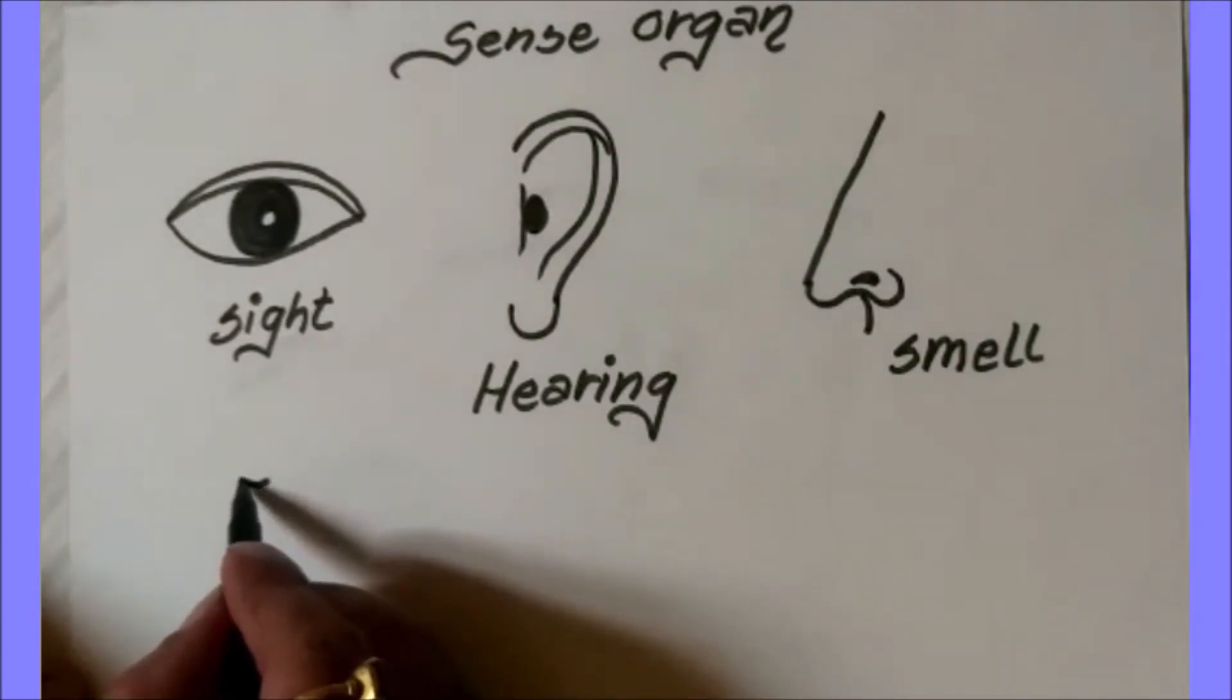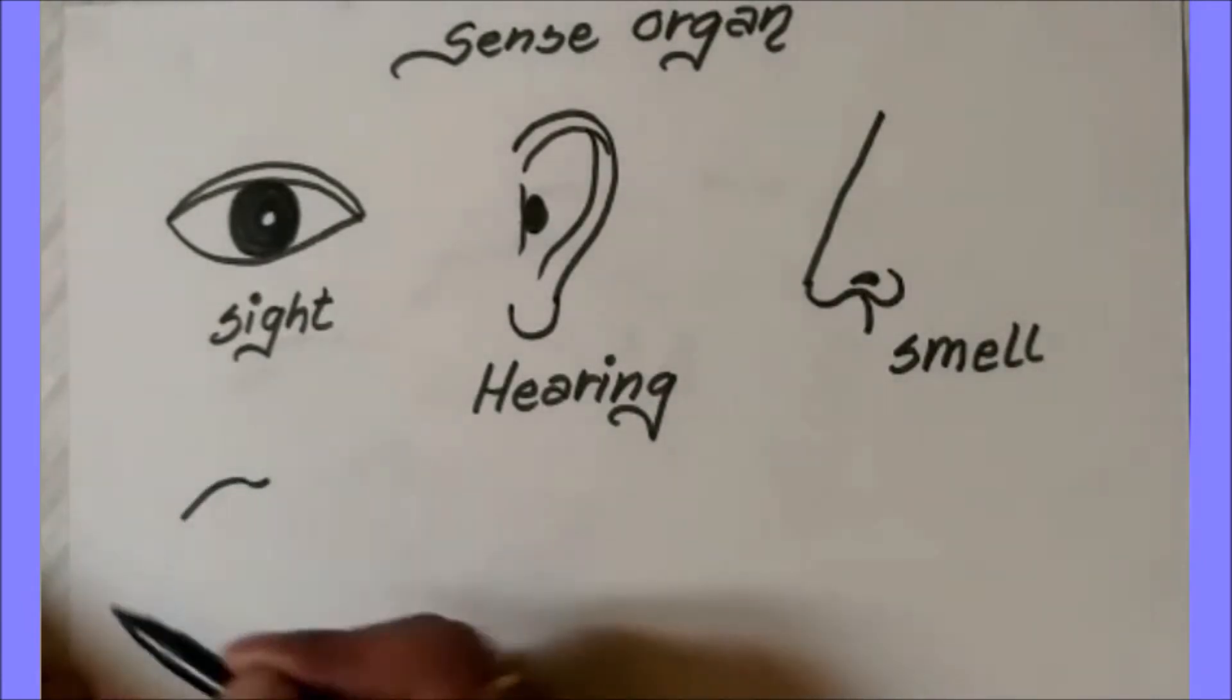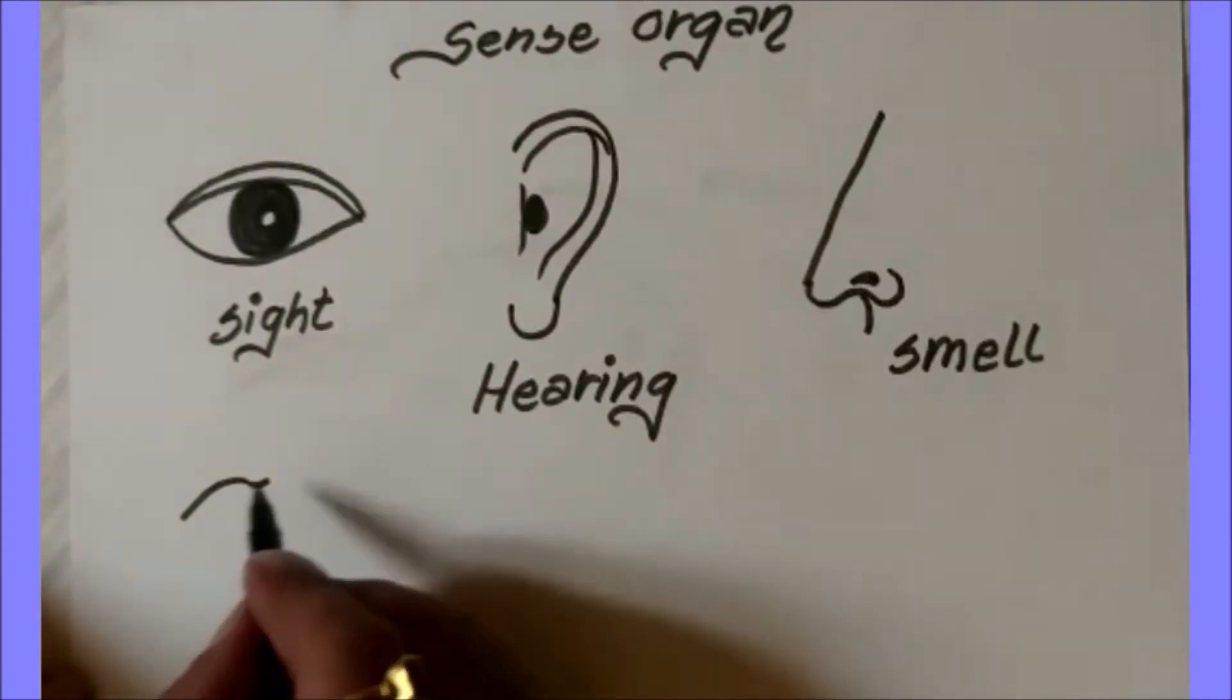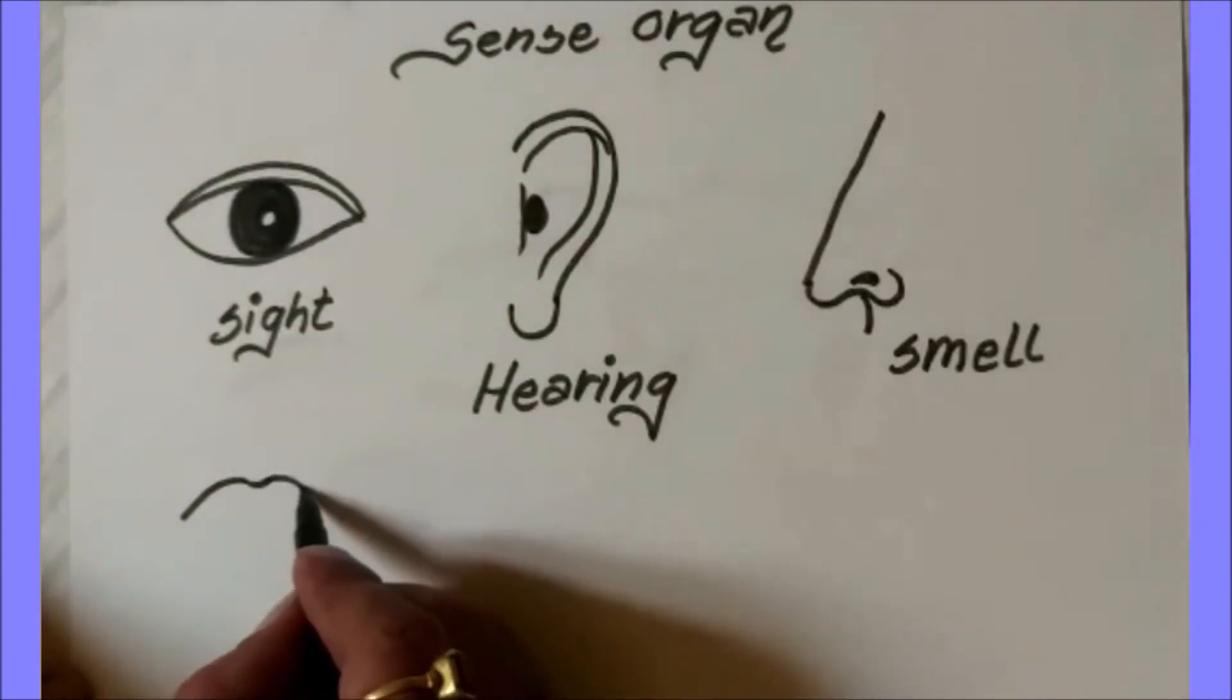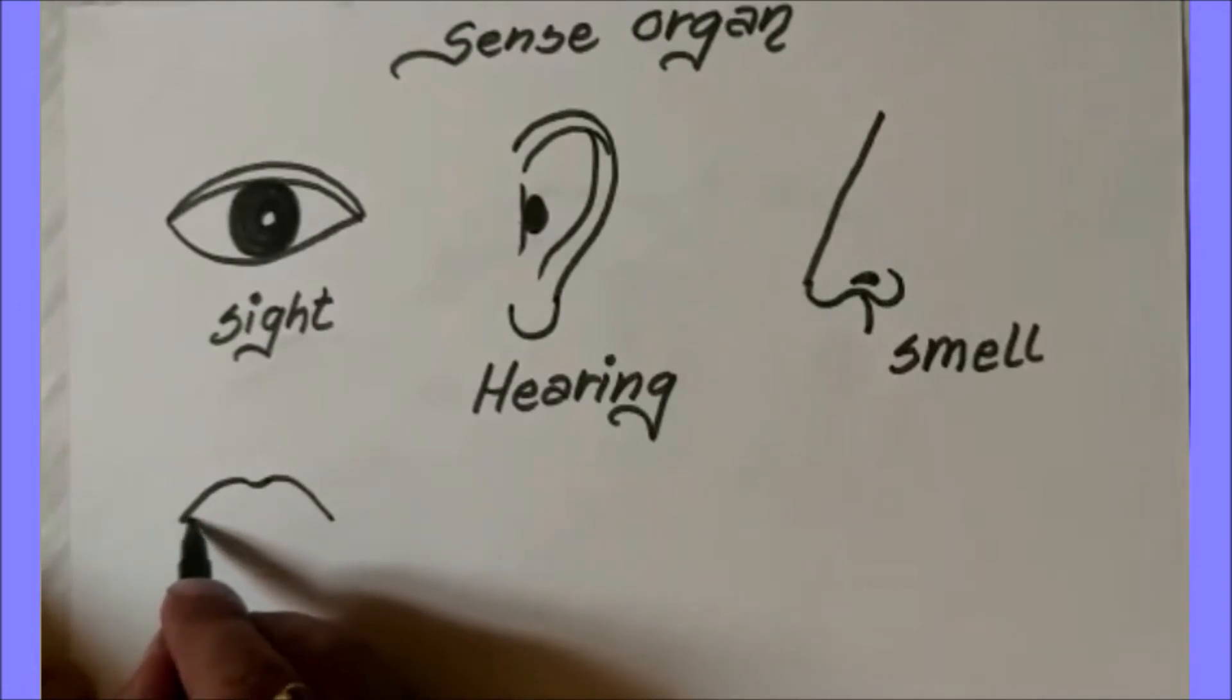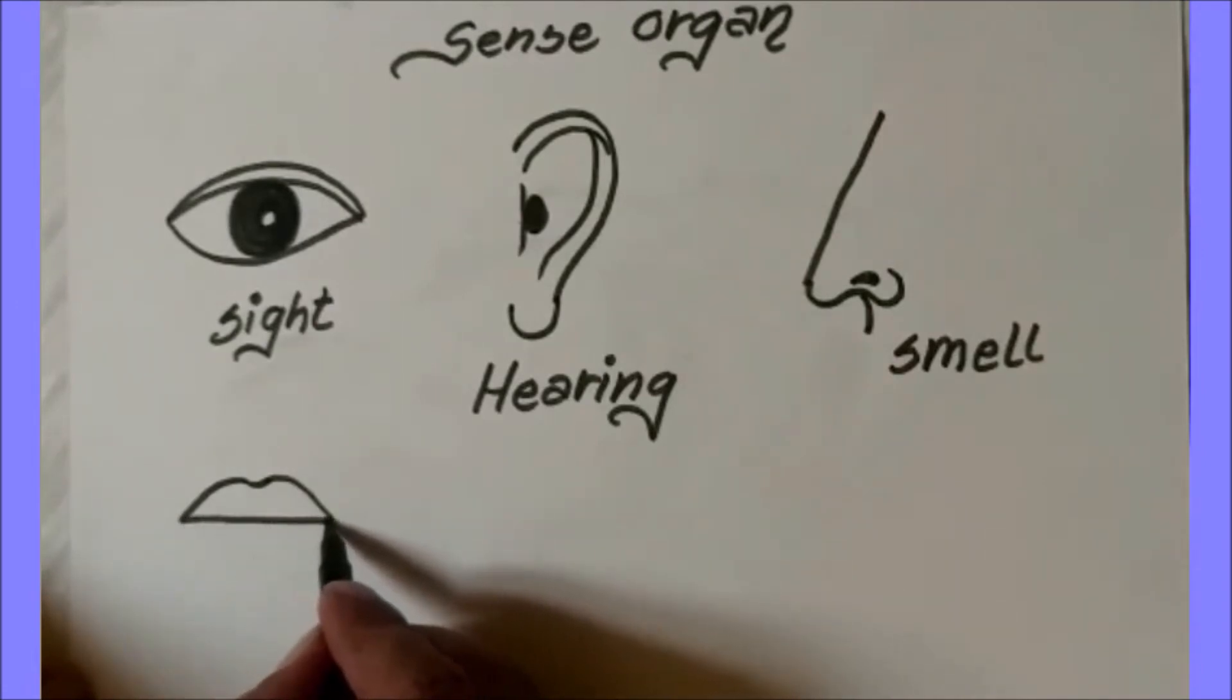Again I am going to make one curl, little bit long towards downside, again here one curl, little bit downside. Again a slanting line for making an upper lip.